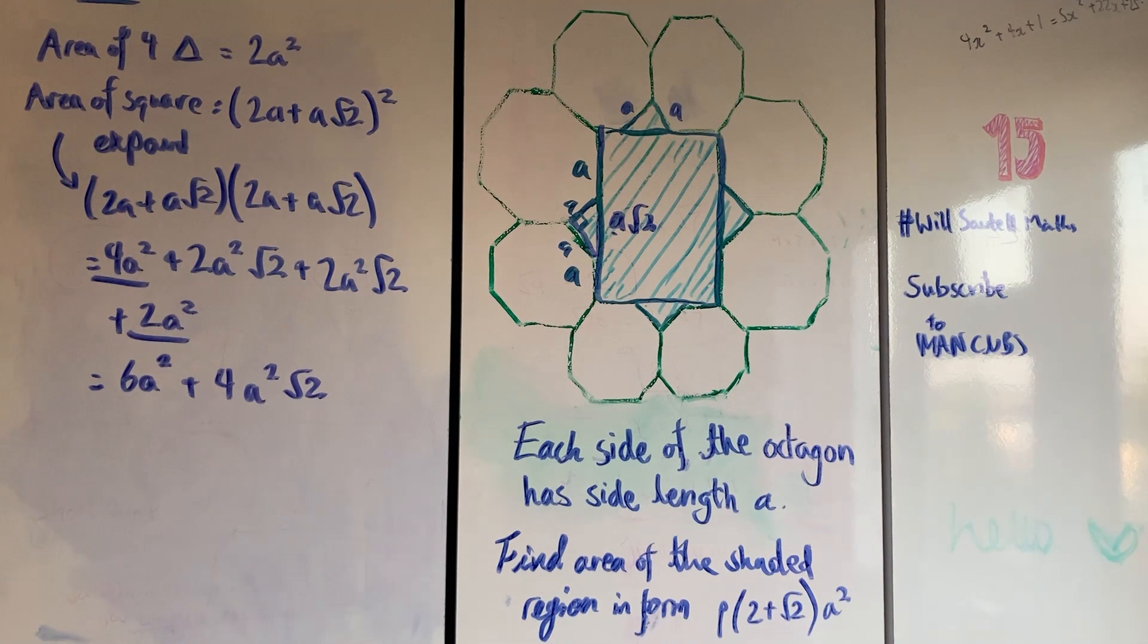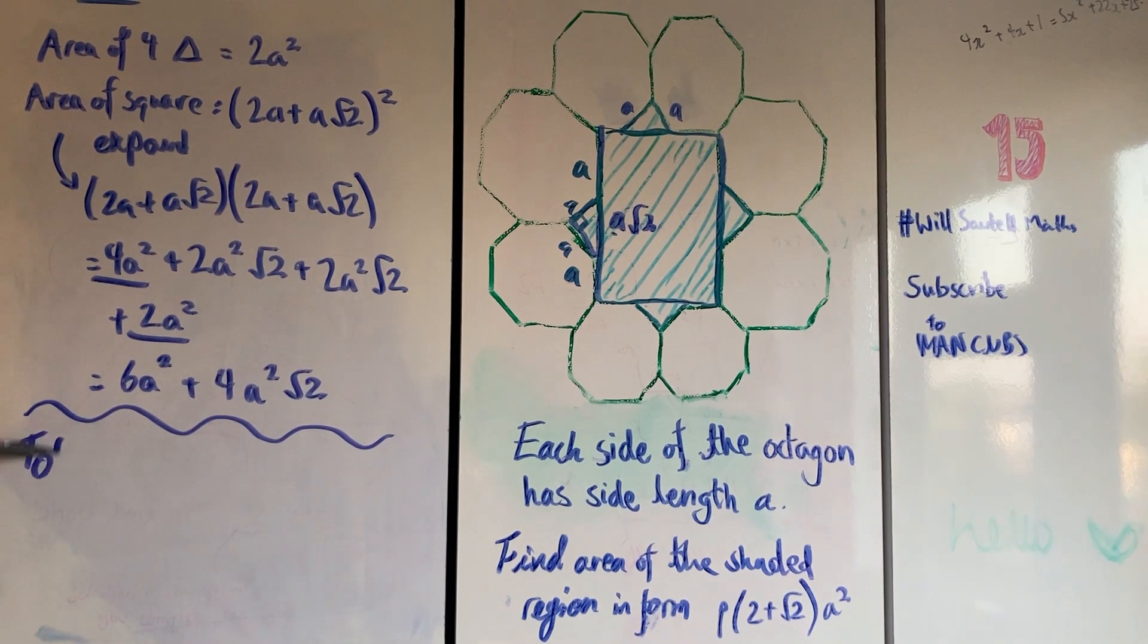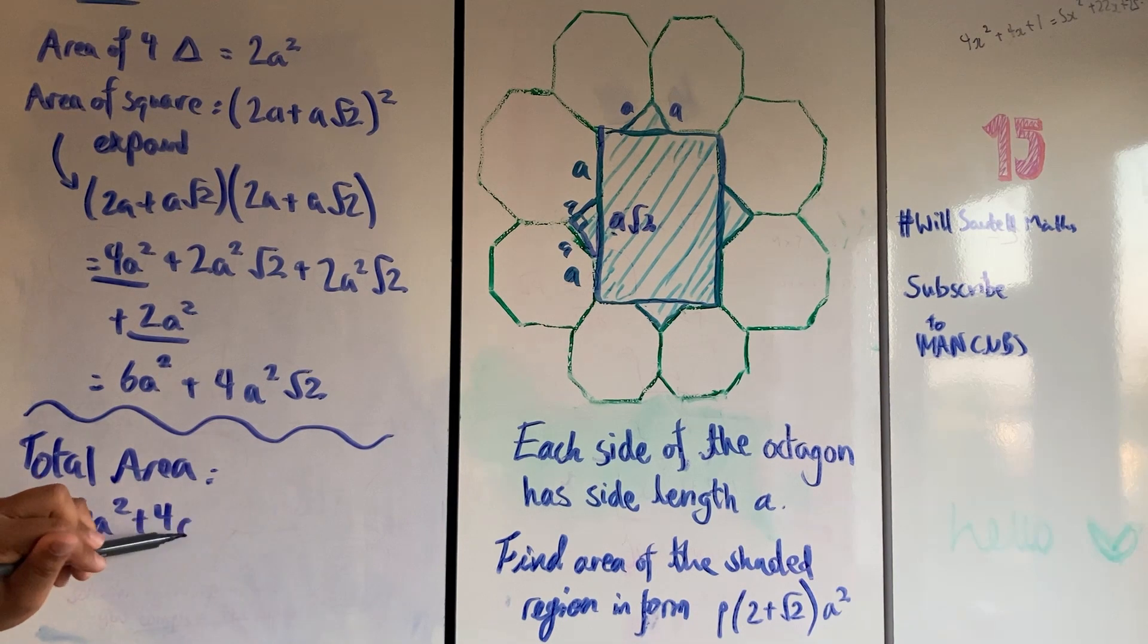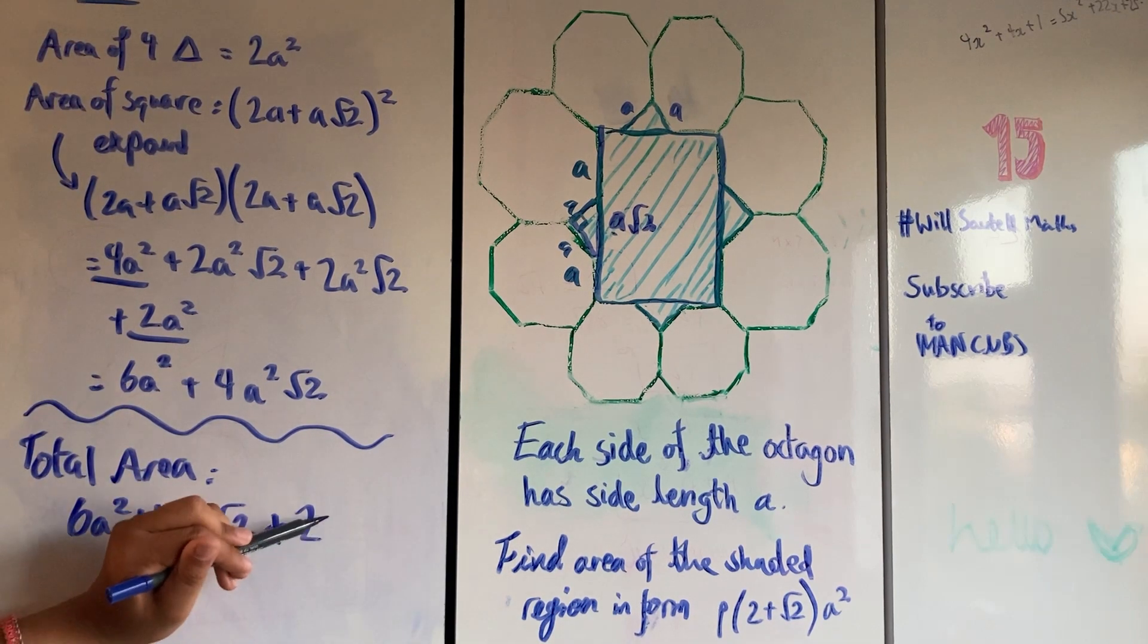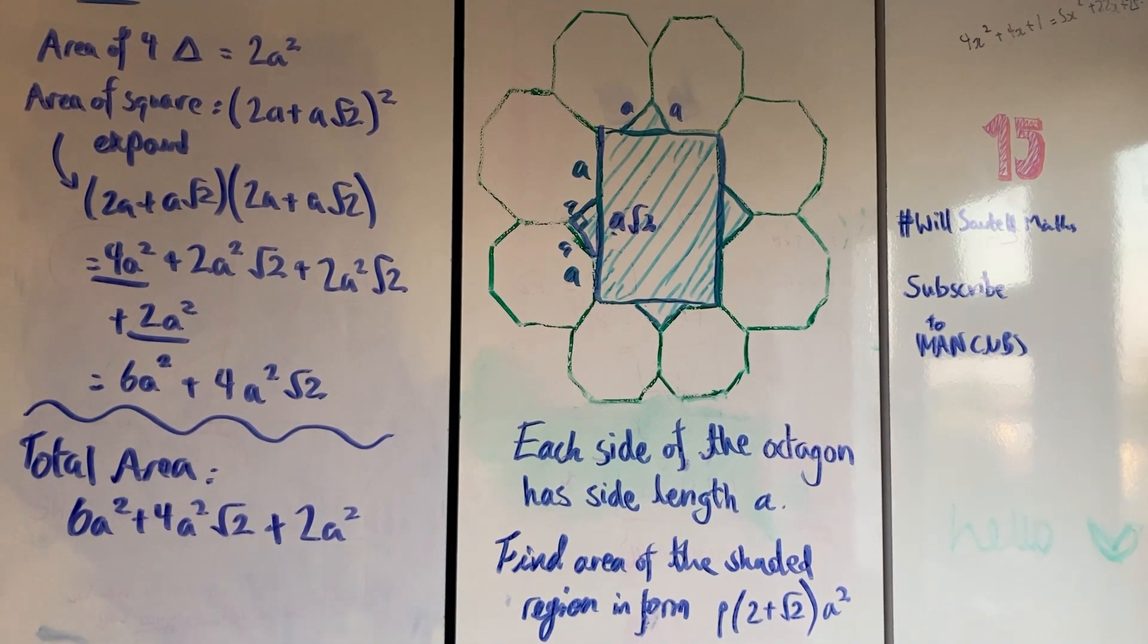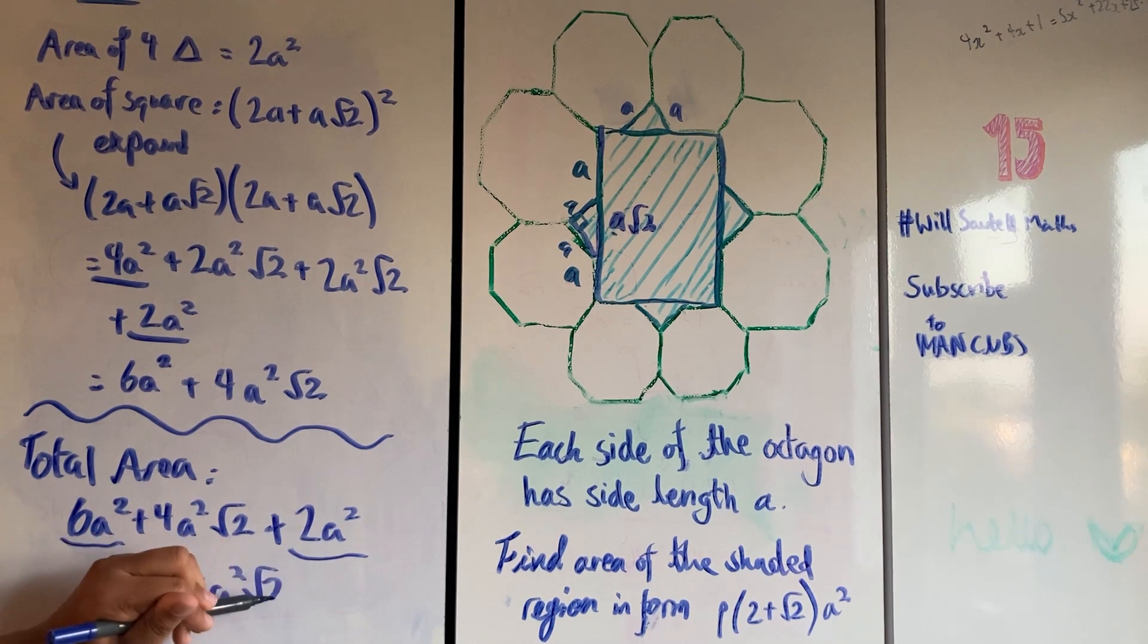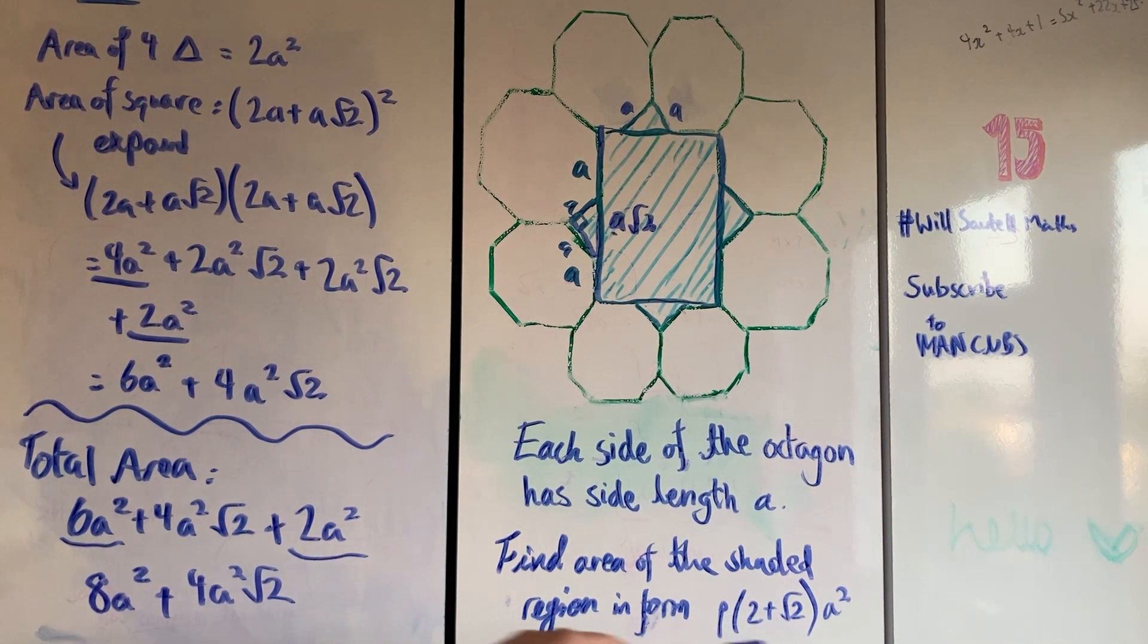But we don't want the area of the square, we want the area of the entire star. So remember at the beginning when we worked out the area of those triangles? Now we're just going to add them together. Our total area is going to equal 6a² + 4a²√2, which is the area of our square, and we're adding on our area of our four triangles which is 2a². Right away we can notice we've got some like terms. That's really nice. We've got 6a² and 2a², which is 8a². And the 4a²√2 is on its own.